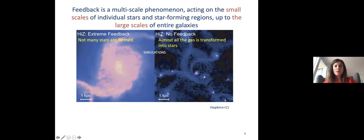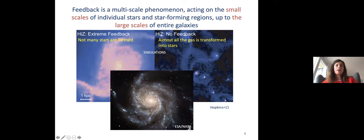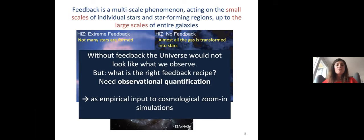Feedback is a multi-scale phenomenon, acting on scales of individual stars and star-forming regions as well as entire galaxies. Simulations by Phil Hopkins show that if you crank feedback all the way up, the galaxy barely forms stars; if you turn feedback off completely, the galaxy converts almost its entire gas reservoir into stars in a runaway process. The reality is somewhere in between — without feedback from massive stars, the universe would not look like what we observe.